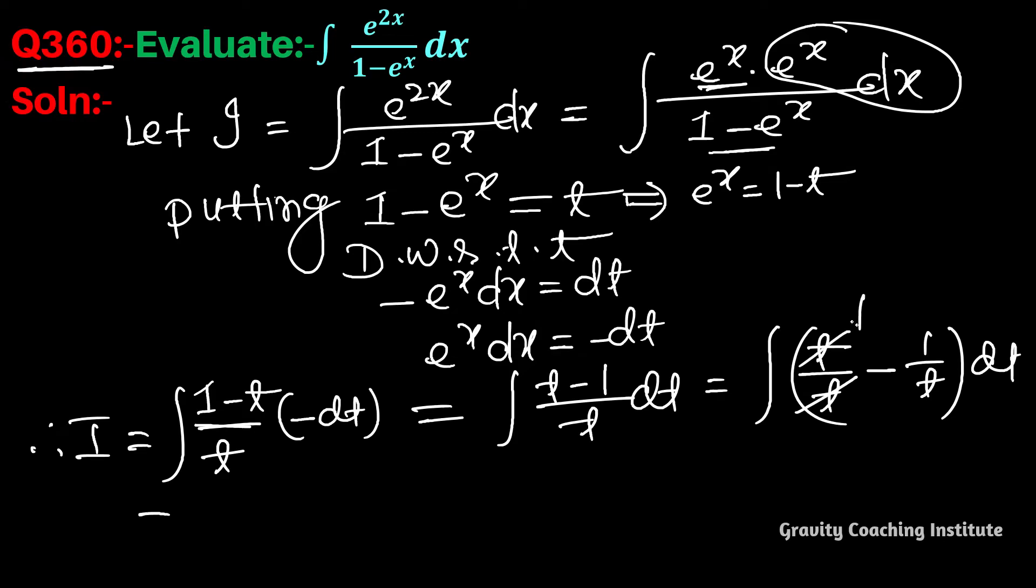Equal to integration dt minus integration 1 by t dt. This gives t minus log modulus t.